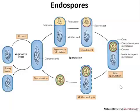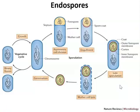Essentially, sporulation is like a cell going into hibernation, while germination is like when hibernating cells wake up and start to reproduce — like bears in the winter who wake up and mate in the spring. Bacteria are capable of producing spores at any time where conditions are no longer optimal, so it's not a seasonal thing.